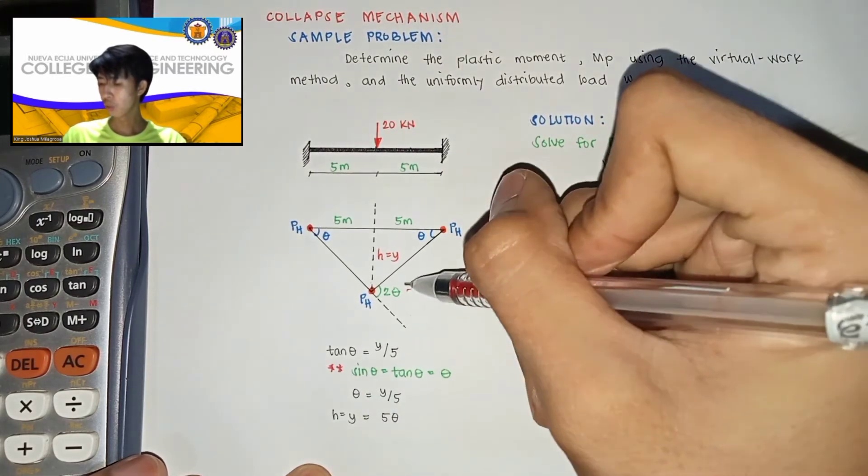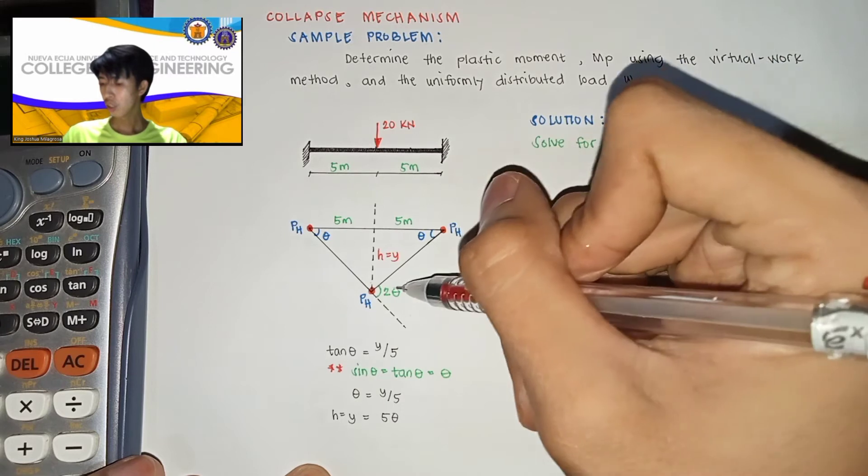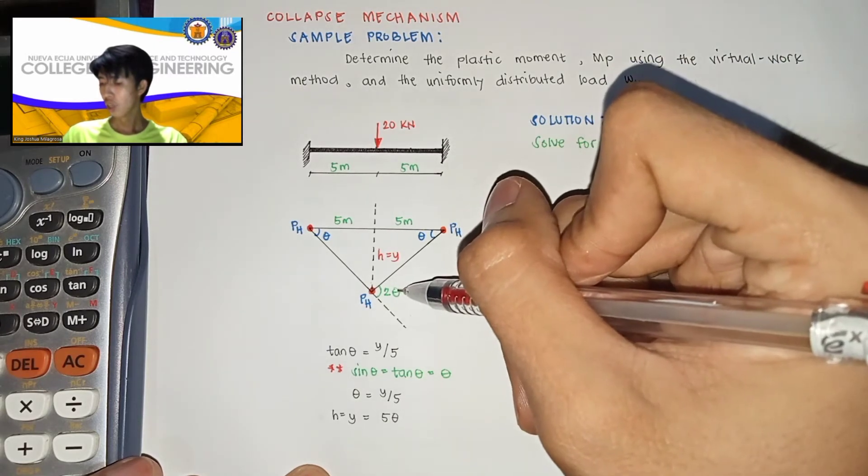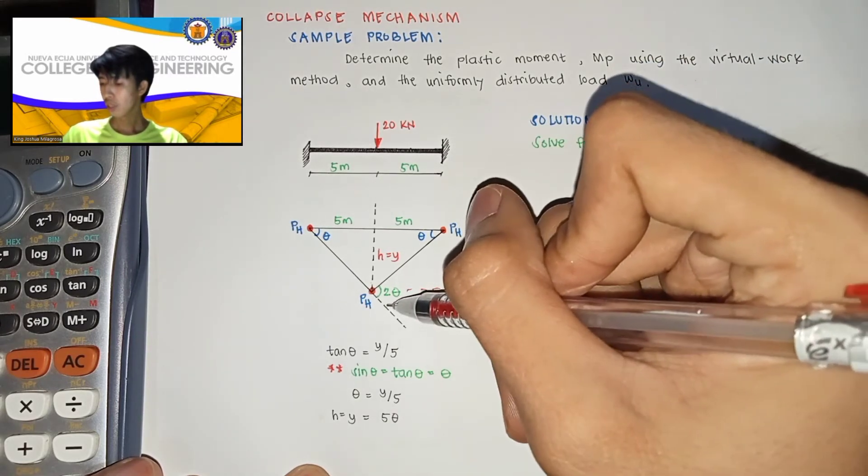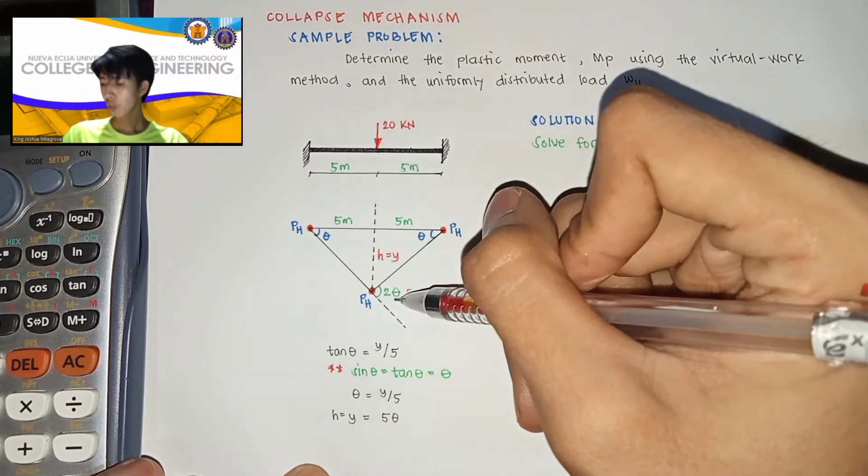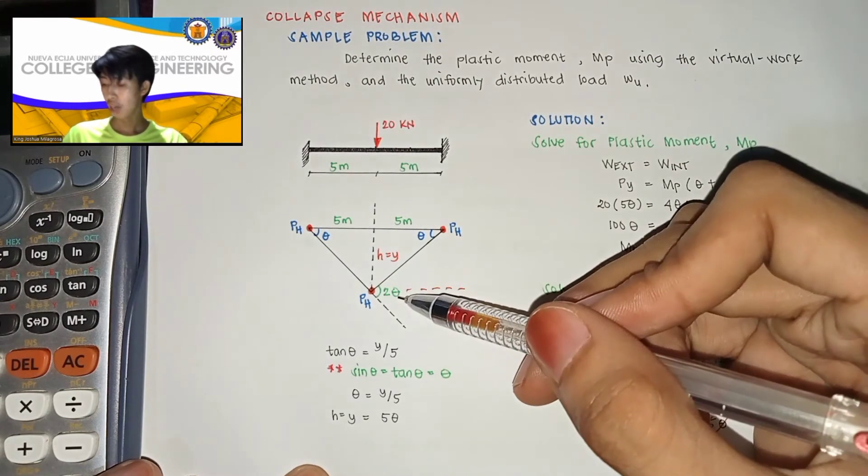So ayan, invisible line. Etong theta na ito is equal lang din sa theta dito. So etong theta dito equal sa theta dito. So theta plus theta is equal to 2 theta. Kaya 2 theta yung naan dito.